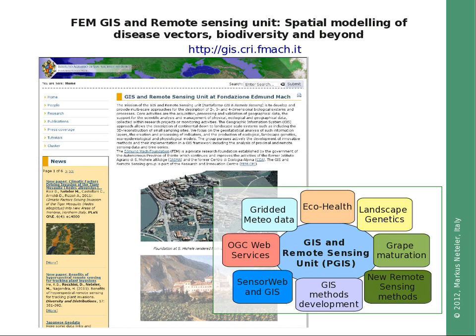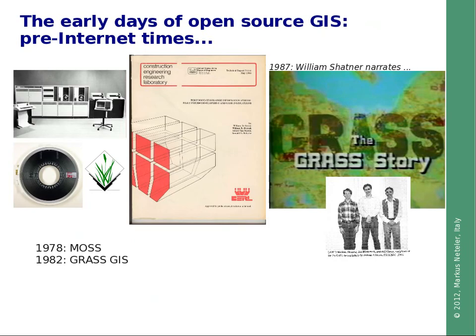Now I want to look back into the early days of Open Source GIS. It is important to know that this predates the Internet era. In those days, computers were very big and data and software exchange happened on magnetic tapes. In the early 1980s, the first Open Source GIS systems appeared. One was the MOS system and the second was GRASS GIS, which is still under continuous development.